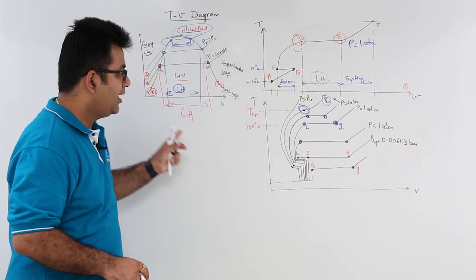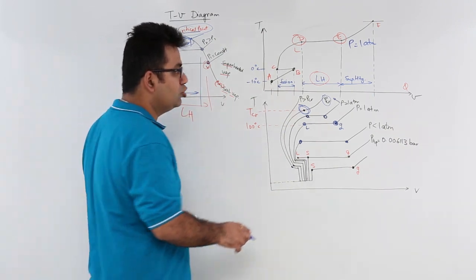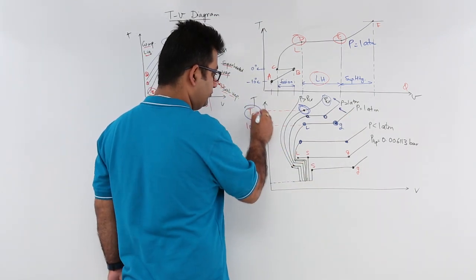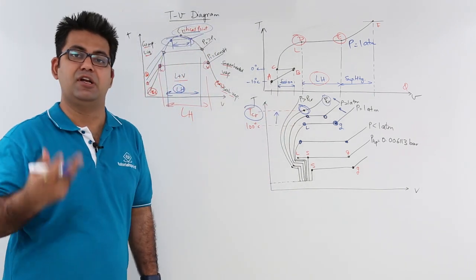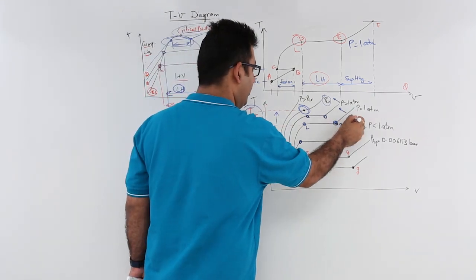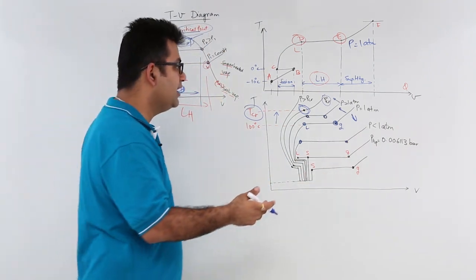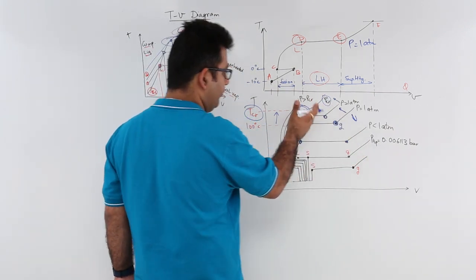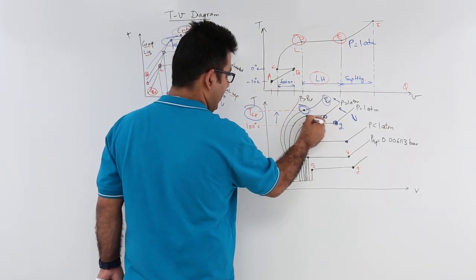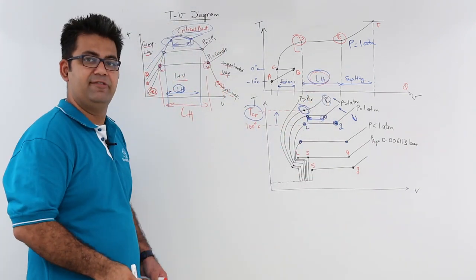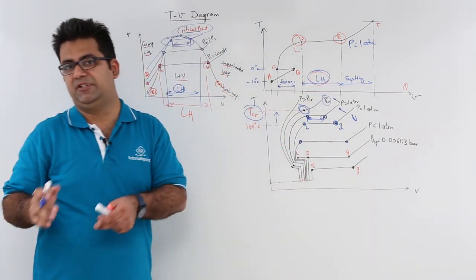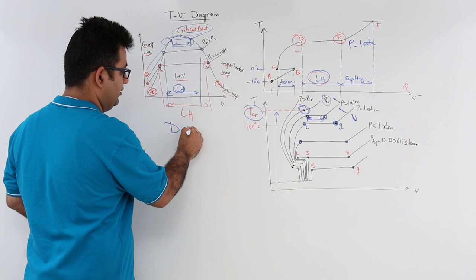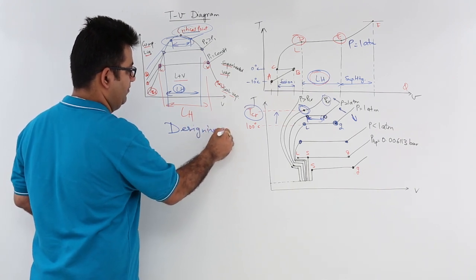Remember from this TV plot: as you go above atmospheric pressure, the saturation temperature also increases. If you go below atmospheric pressure, the saturation temperature decreases. As you go above atmospheric pressure, the latent heat required to change from liquid to vapor also keeps decreasing. This is of considerable importance while designing boiler plants for power plants.